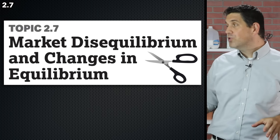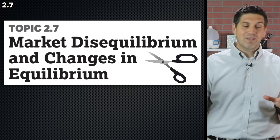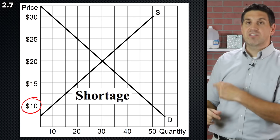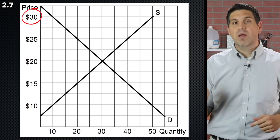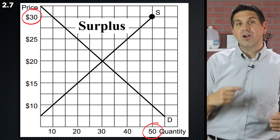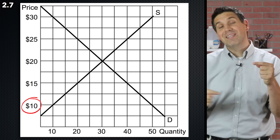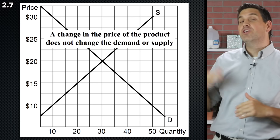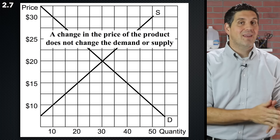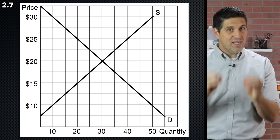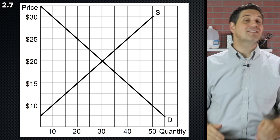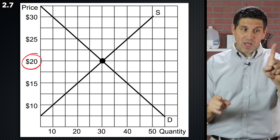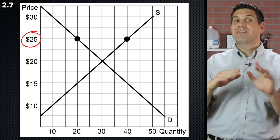Topic 2.7 is probably the most important. You take supply and demand, start shifting them, and identify changes in price and quantity. When the price is below equilibrium, we have a shortage because quantity demanded exceeds quantity supplied. When price is above equilibrium, we have a surplus. Remember: the price never shifts the curve. A change in price moves along the curve, changing quantity demanded and quantity supplied — not the demand and supply themselves.